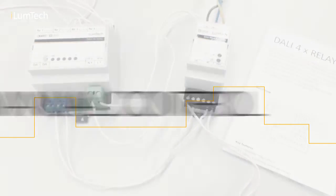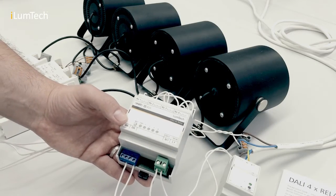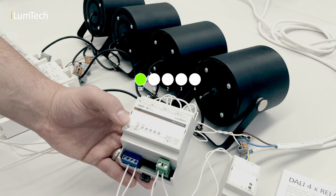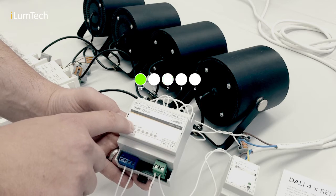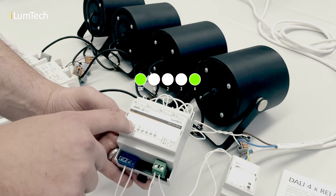Manual control. Manual control is useful for testing purposes when there is no DALI control device. A short press of the test button selects the relay contact, indicated by the flashing of the corresponding LED indicator.